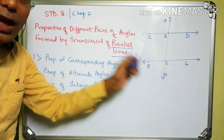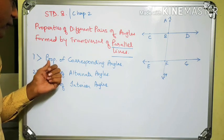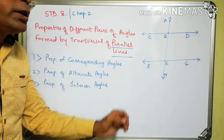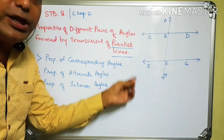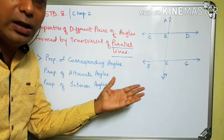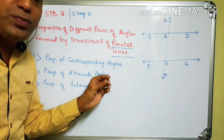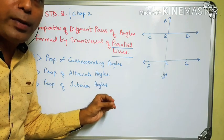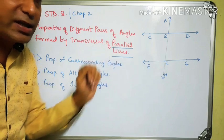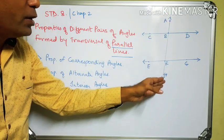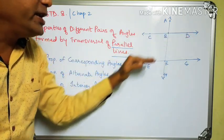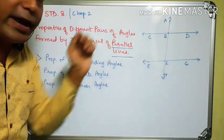The first property is the property of corresponding angles. Each pair of corresponding angles formed by two parallel lines and their transversal are congruent. Here, line AH is a transversal of line CD and line EG. Line CD and line EG are parallel lines and AH is the transversal.